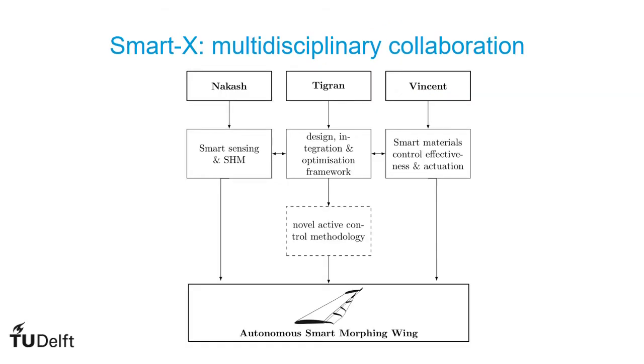SmartX is a multidisciplinary collaboration between three PhDs that form the core of the project team. These three PhDs contribute to three technology streams. There is a development stream in smart sensing and structural health monitoring. Also, smart piezoelectric actuation and sensing is investigated. My own study is mainly focused on the morphing design, optimization, and integration framework. And finally, the implementation of novel active control methodology for autonomous smart morphing wing.